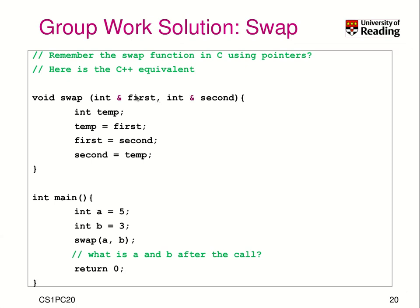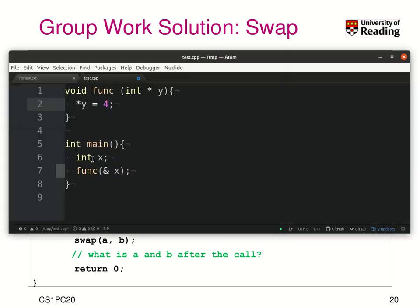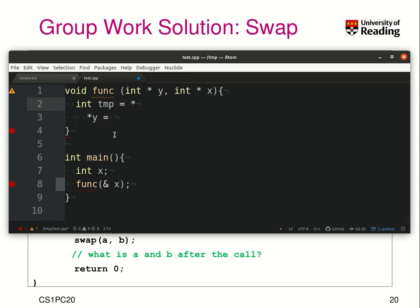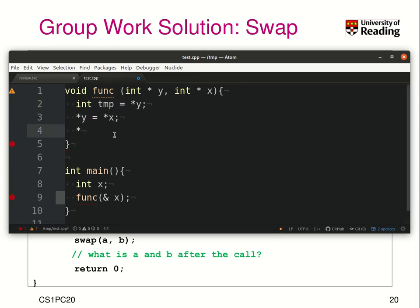Welcome back. Here is now the solution — I hope you succeeded. When we call the function swap we give it two arguments a and b, two integers. In the declaration of swap, the signature takes two call-by-reference arguments, so first and second are both references to integers. Now I need a temporary variable, copying one of them into temp, then that value can be overwritten with the second value, and the second value becomes temp. In C, you had to write something like: int temp = *y; then *y = *x; and *x = temp — that would be the swap function in C.